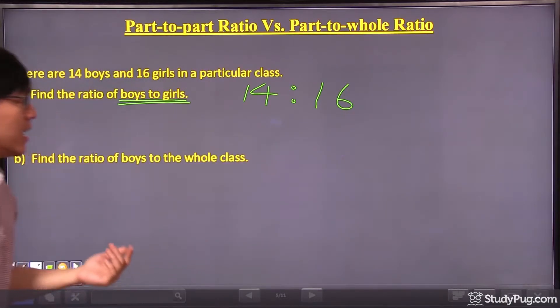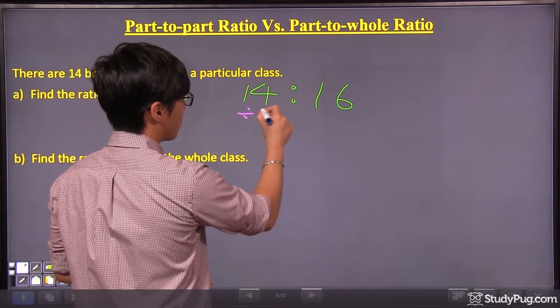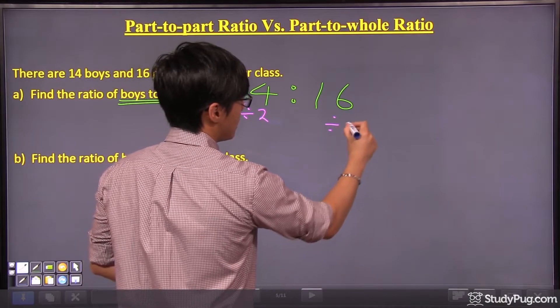And the factor is what? It is 2. So we have to reduce it by dividing both the numbers by 2.